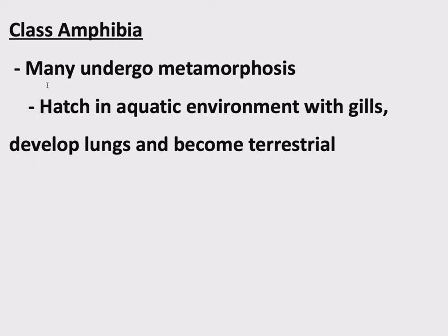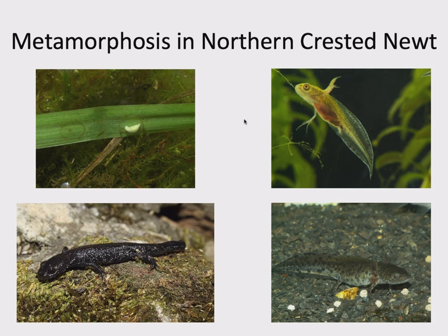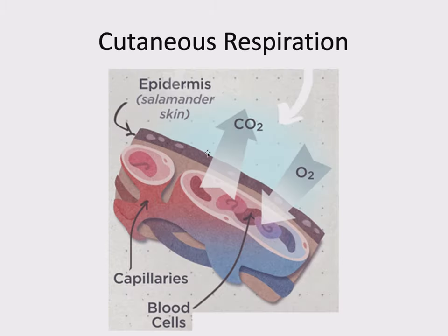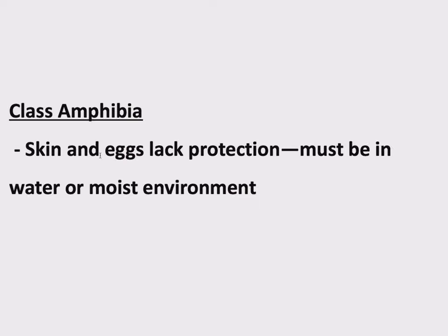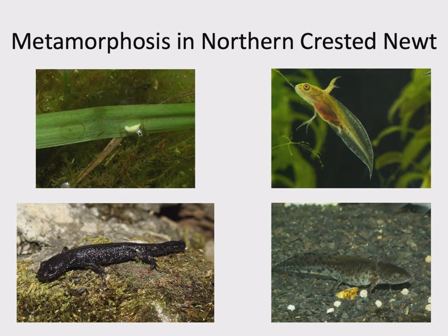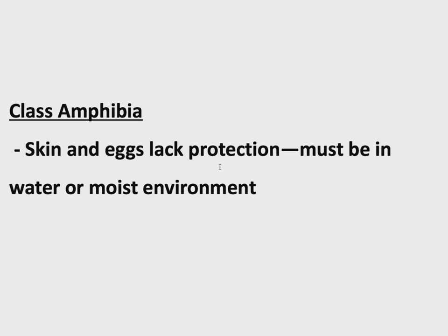There are some exceptions to this, but metamorphosis can be associated with amphibians. These are the first terrestrial vertebrates, but they still have to be close to water because a substantial amount of their life cycle takes place in water. Another factor is their skin — which is particularly thin to enable cutaneous respiration — lacks protection and dries out easily, and so do their eggs. Their eggs don't have any shell or protective barrier, so both skin and eggs can dry out, meaning they must be in water or very moist environments.